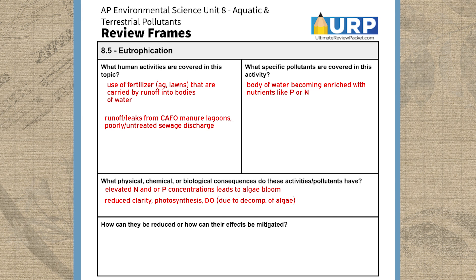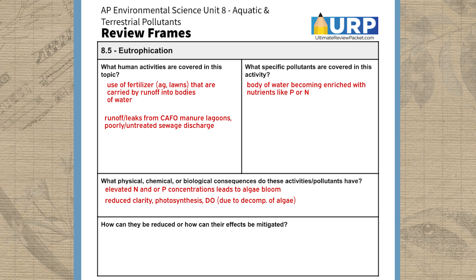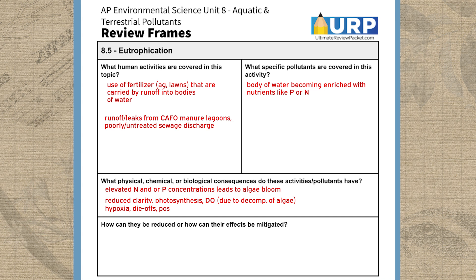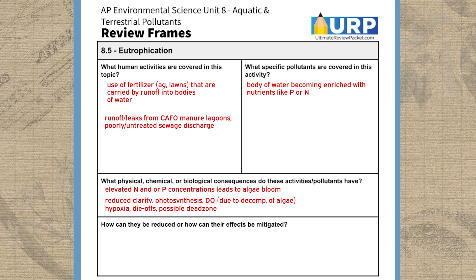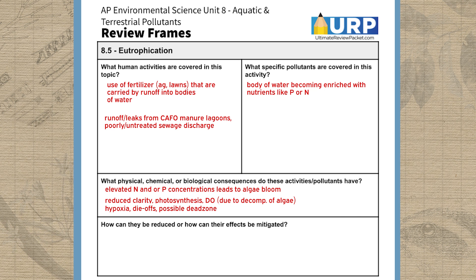The algae die-off leads to microbes in the water using up a lot of dissolved oxygen to decompose the dead algae. This decrease in dissolved oxygen leads to a condition called hypoxia, where there's not enough dissolved oxygen in the water, which can kill other organisms like fish or macroinvertebrates that don't have enough oxygen for respiration.